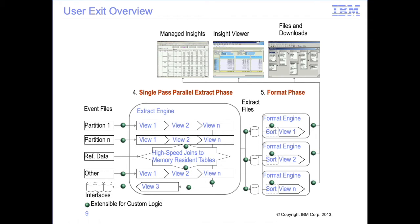Write exits stand between SAFIR and the extract files. They receive extract records and can manipulate them before being written to extract files. Format exits, the only GBB-MR88 exit, accept summarized and formatted format phase output records prior to being written to files. Format exits are very similar to write exits except that the records used are the final output record rather than the extract record. At the end of this module, we will also touch upon non-SAFIR exits, the sort input exits.